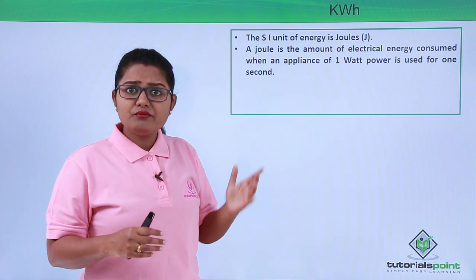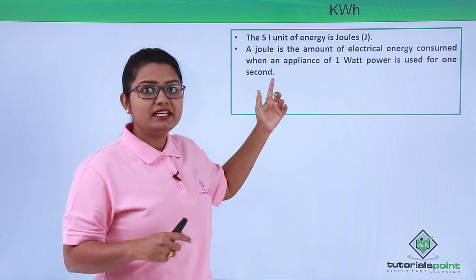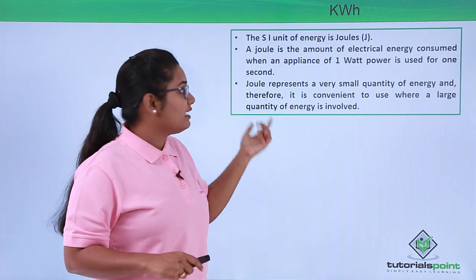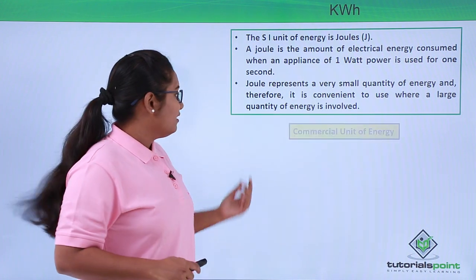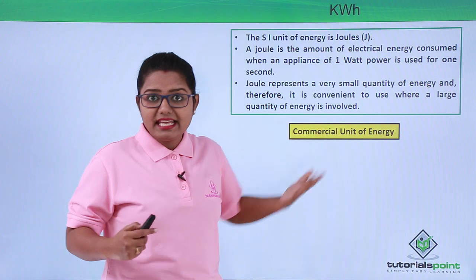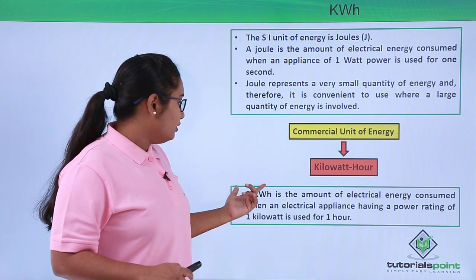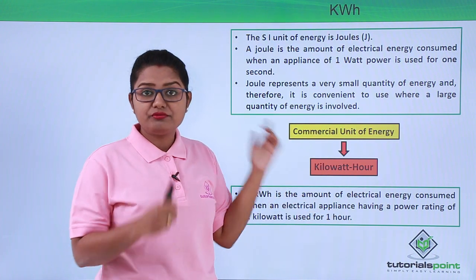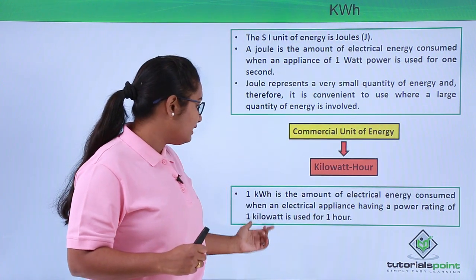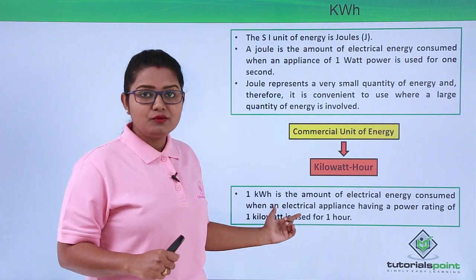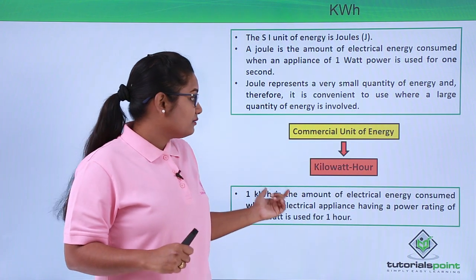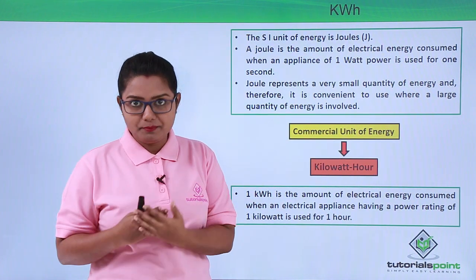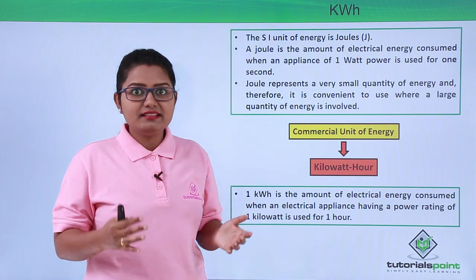The commercial unit of energy is kilowatt hour. One kilowatt hour is the amount of energy consumed when an electrical appliance having a power of 1000 watts, or 1 kilowatt, is used for 1 hour. That sounds quite feasible, and that is why we use kilowatt hour instead of joules for commercial purposes in homes, shops, industries, and other larger establishments.